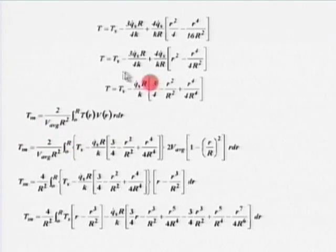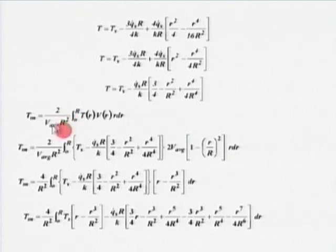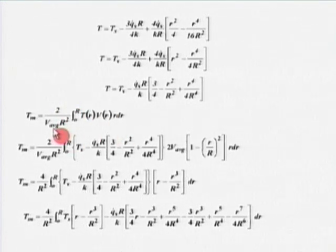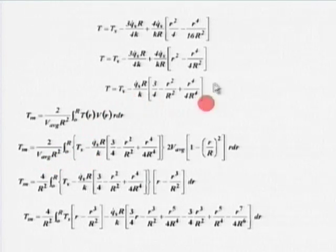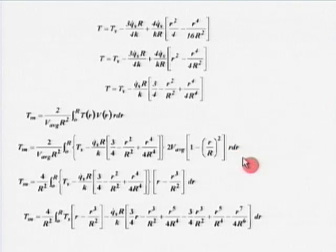To get T_m, I have the temperature profile T(r). The bulk temperature formula is T_m = [2/(V_avg R²)] × ∫₀ᴿ T(r) × V(r) × r dr. Substituting the parabolic velocity profile V = 2V_avg[1 − (r/R)²] and the temperature profile T(r).